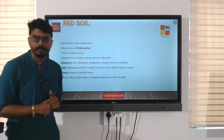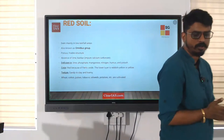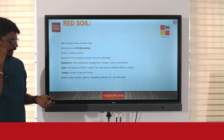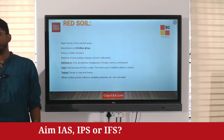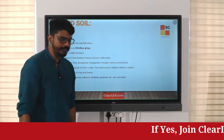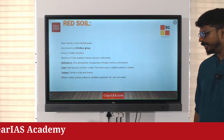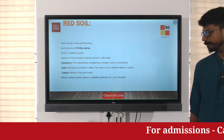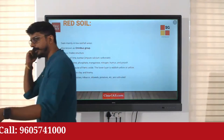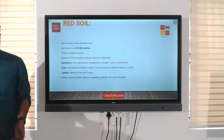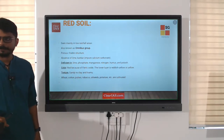The color is red because of the presence of ferric oxide or iron oxide. The lower layer is reddish-yellow or yellow in color. The texture ranges from sandy to clay and loamy — a mixture of all three.